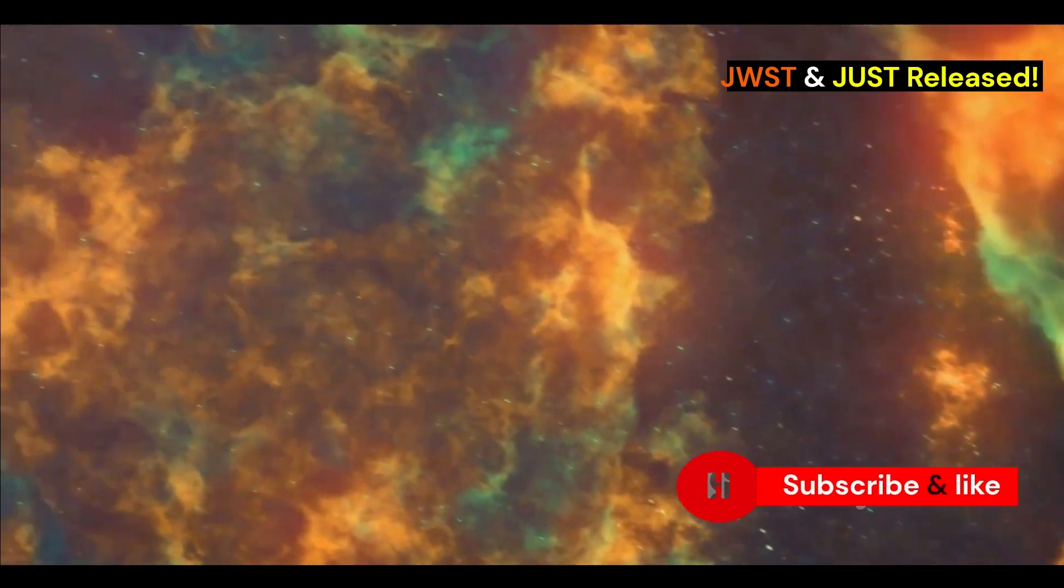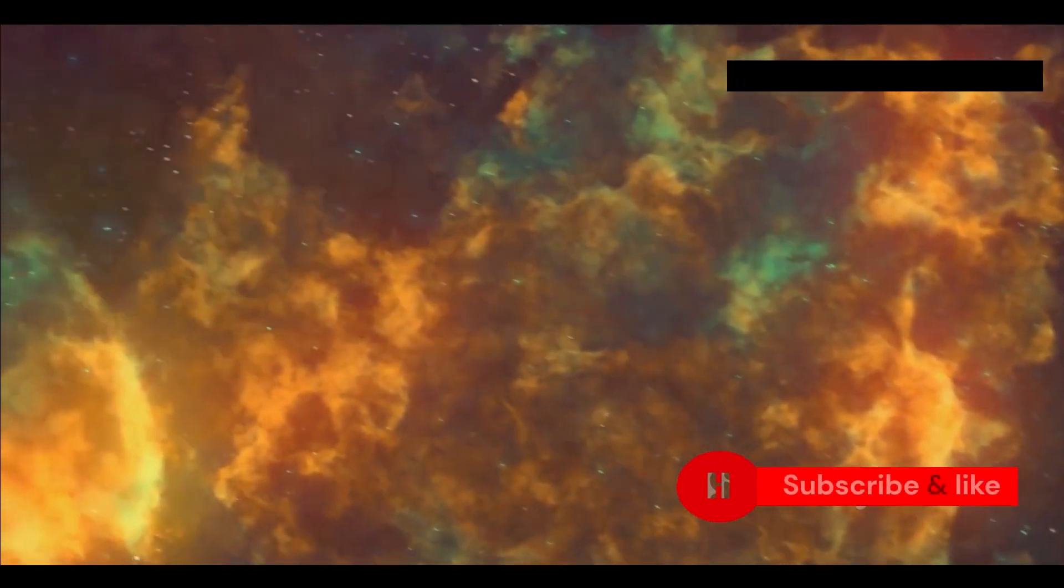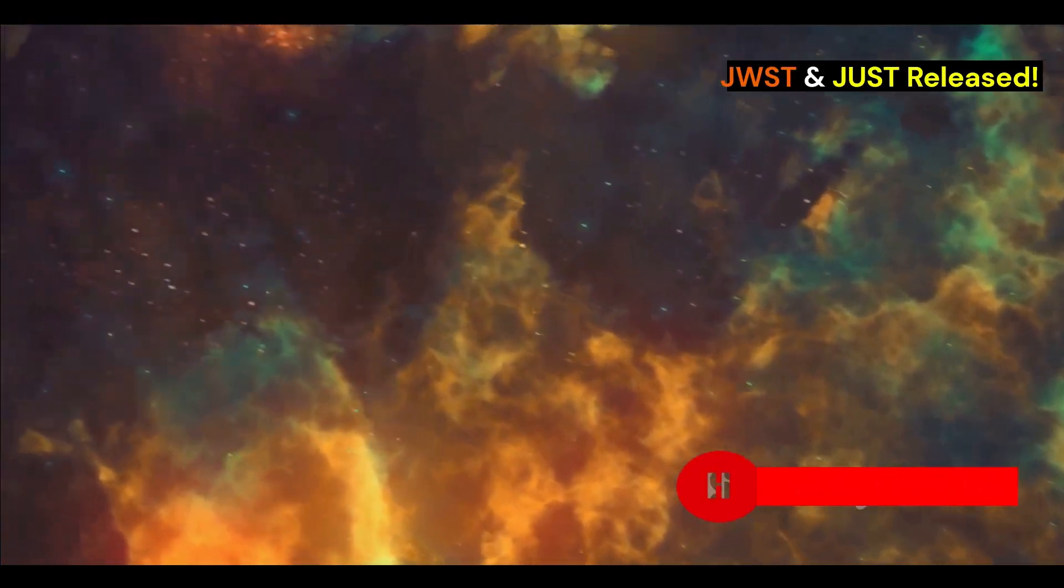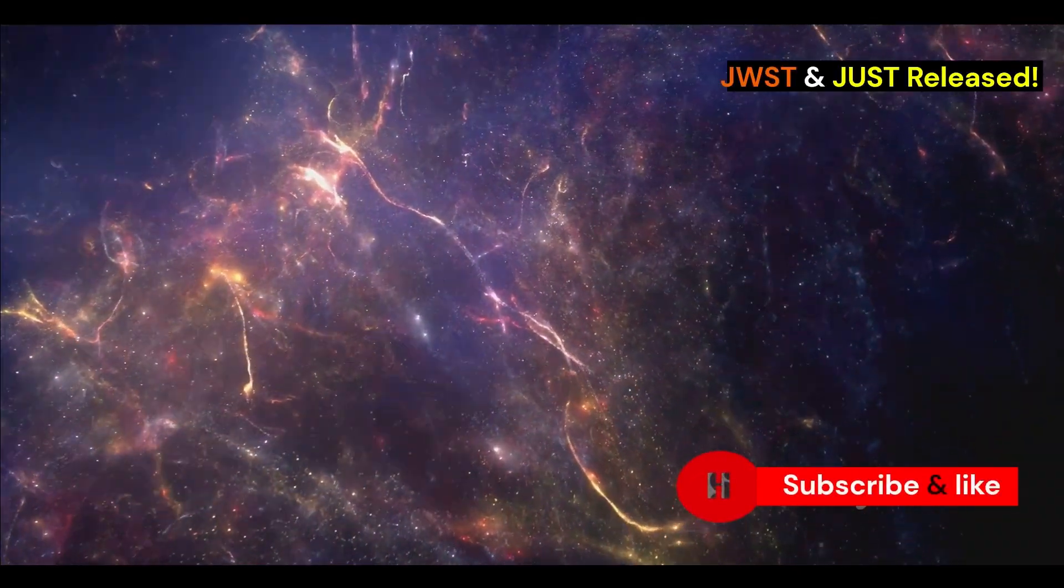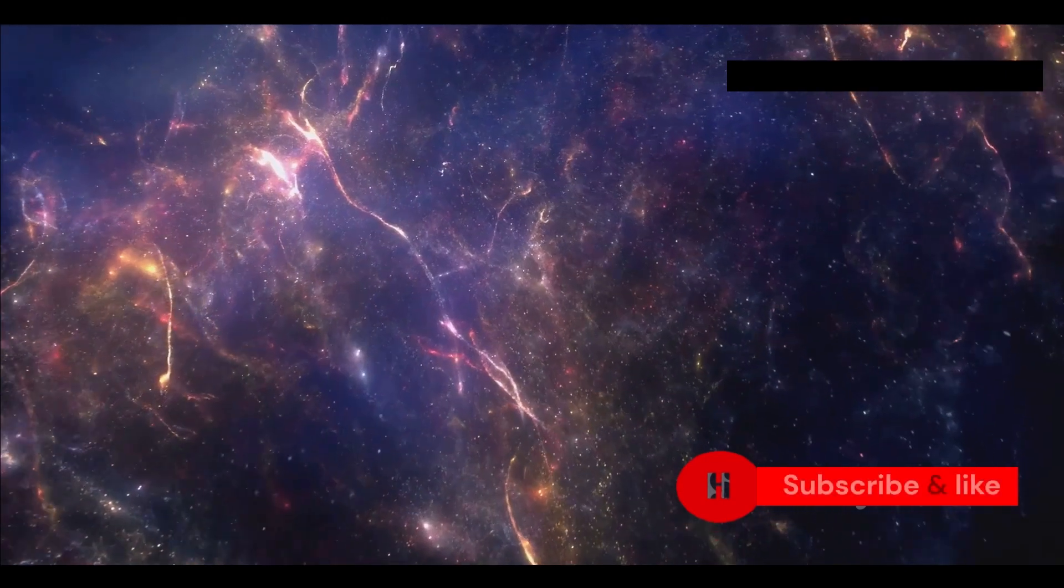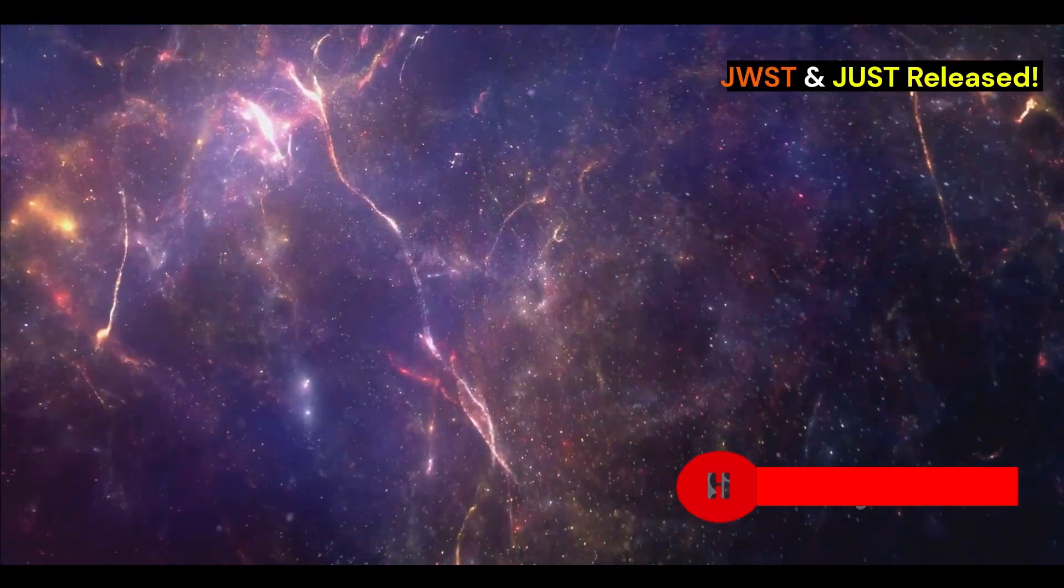JWST's infrared instruments help us study what the nebula is made of and how it moves. By looking at planetary nebulae, like the Southern Ring Nebula, astronomers can learn about how stars die and how the stuff they're made of spreads out into space.